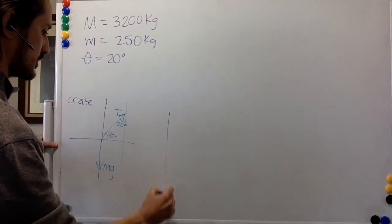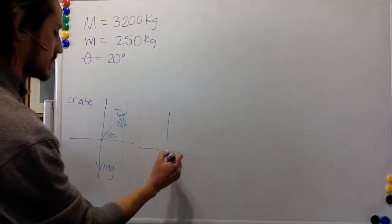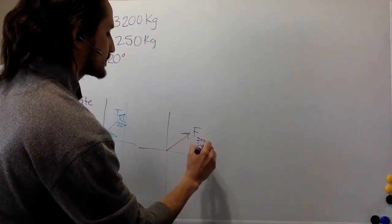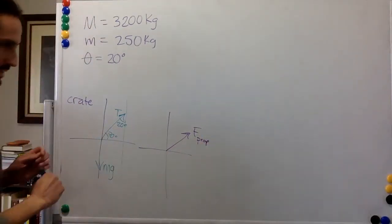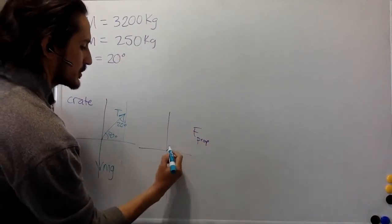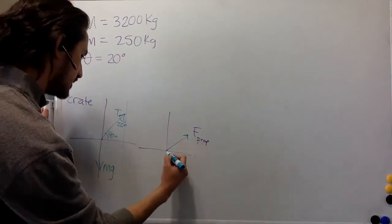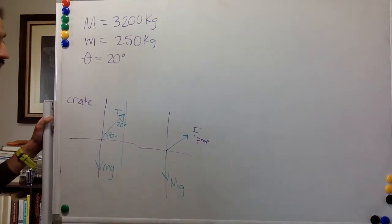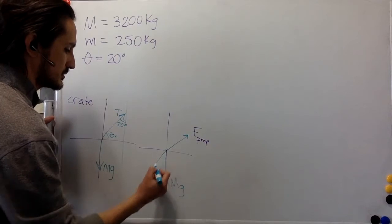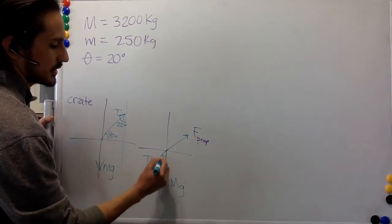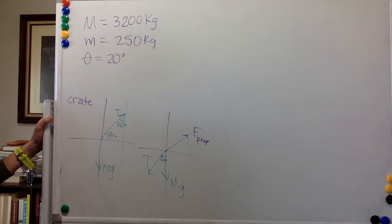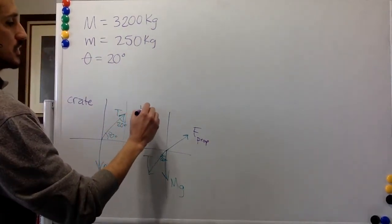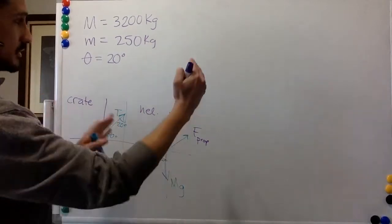So we only need one angle, we don't really need multiple. We will keep track of that. And so this is the crate, and over here I'm going to put the helicopter. So the helicopter has some thrust or propulsion, it's called prop, in this direction. It has its own weight, Mg, capital Mg, and it has a tension. The angle here is 20 degrees.